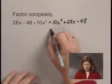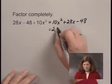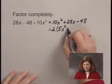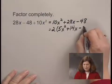And then I'll factor out the common factor of 2. I have 2 times 5x² + 14x - 24.